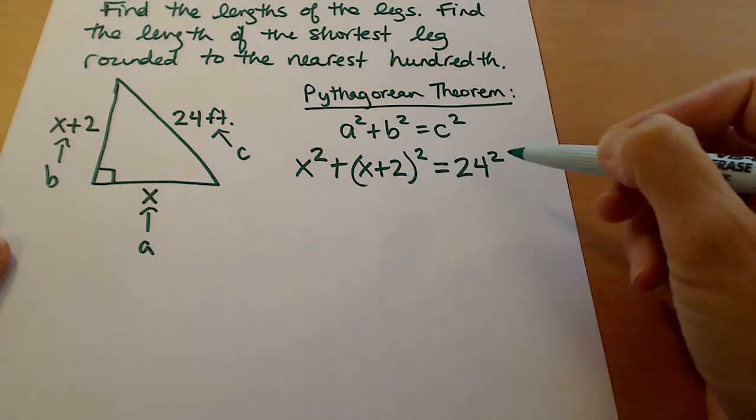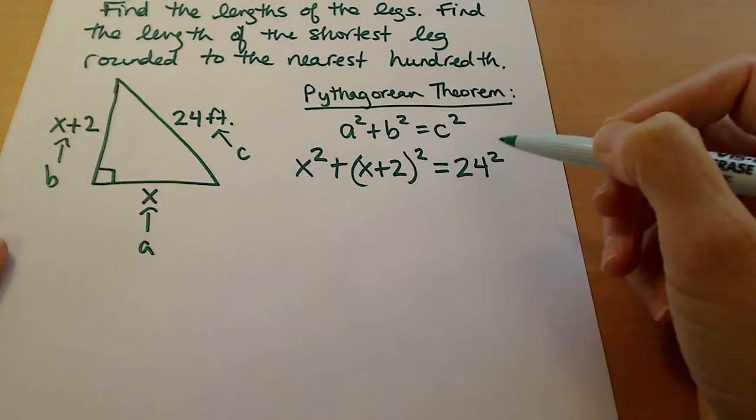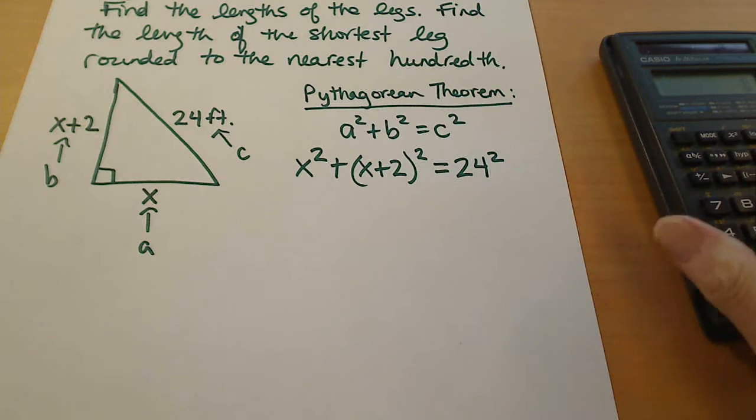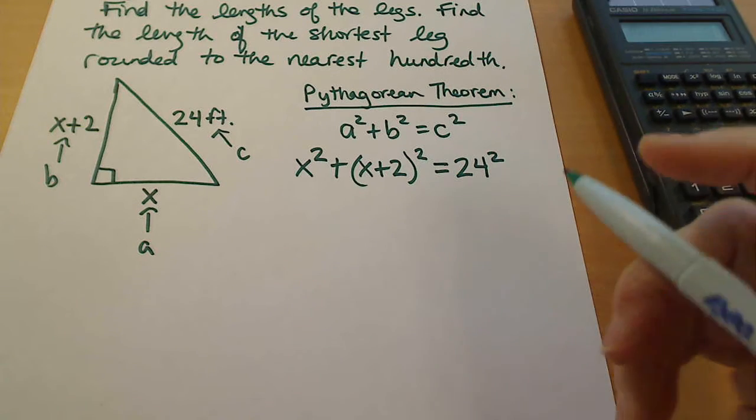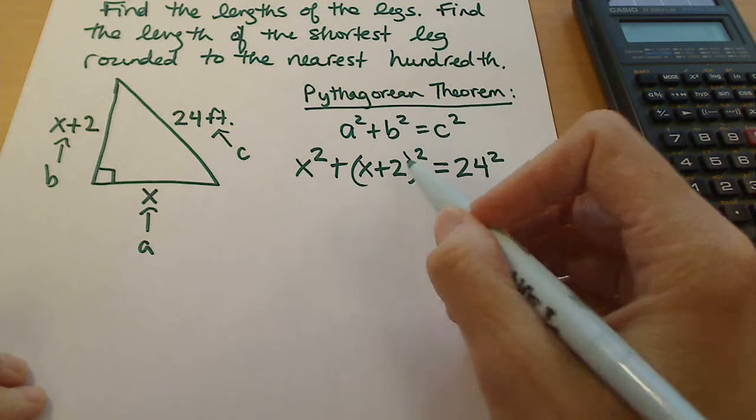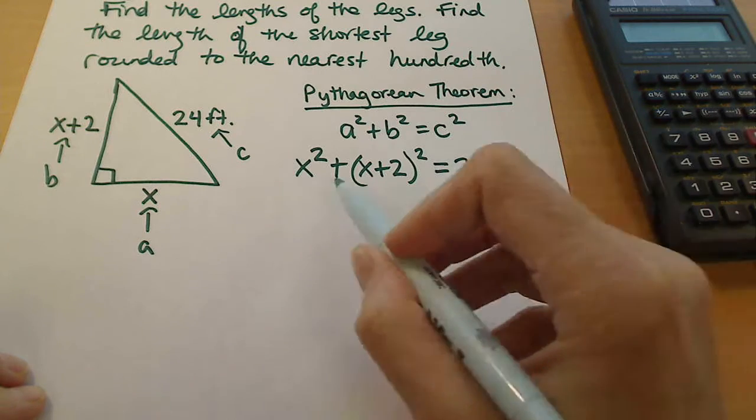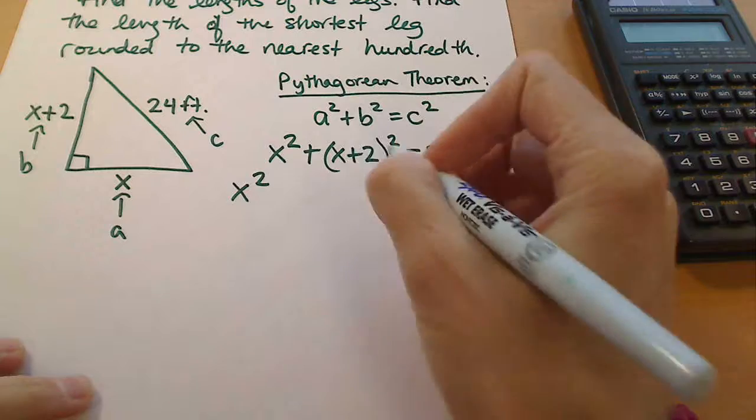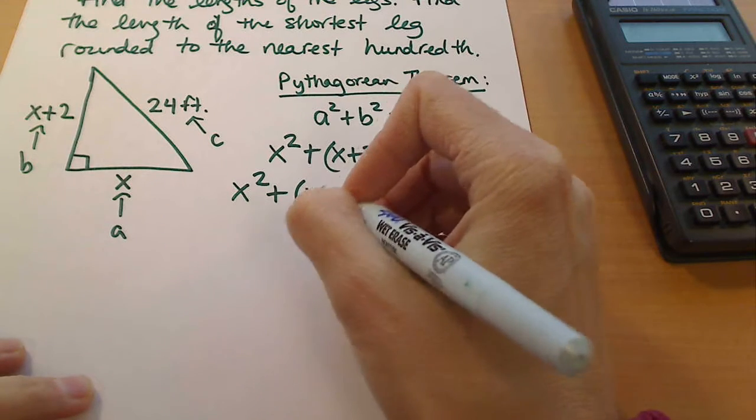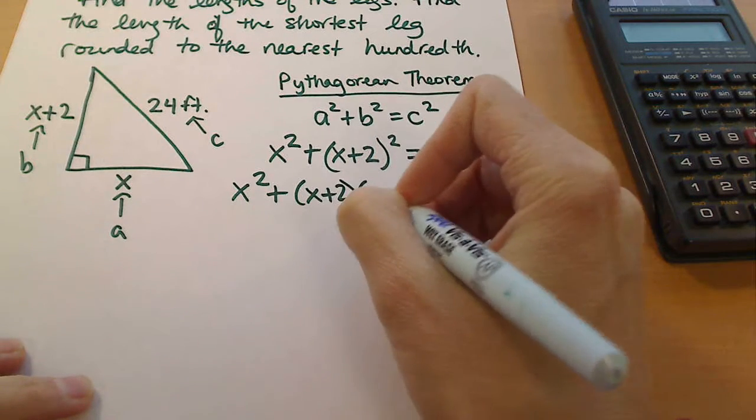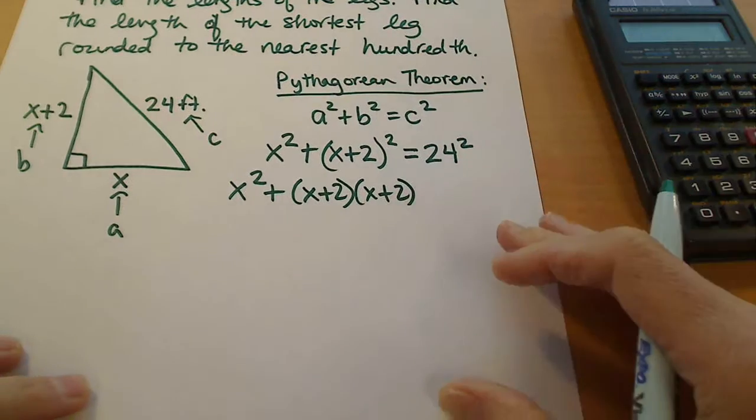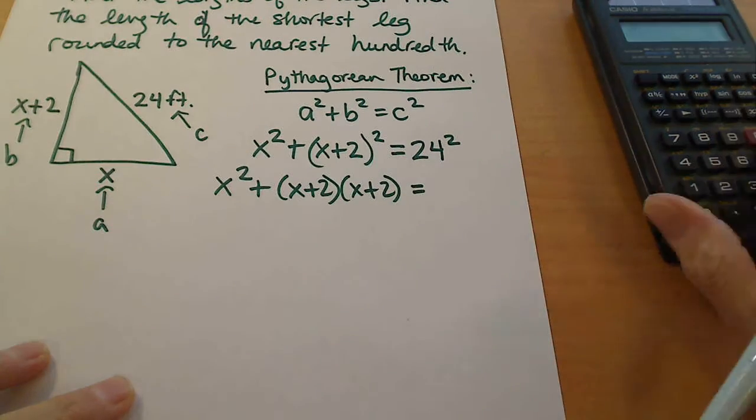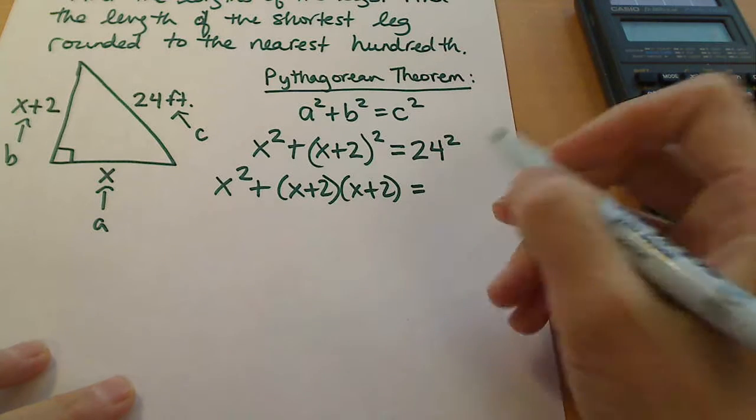What we're looking at now is needing to solve this, and we're going to need to multiply this out and then eventually set it to zero because this is a quadratic. Remember that x plus 2 quantity squared is actually x plus 2 times x plus 2, and then 24 squared is 576.